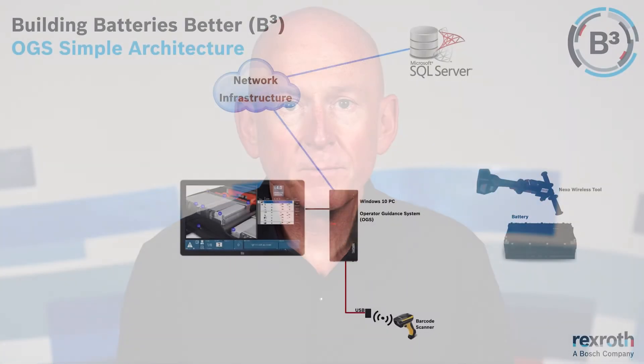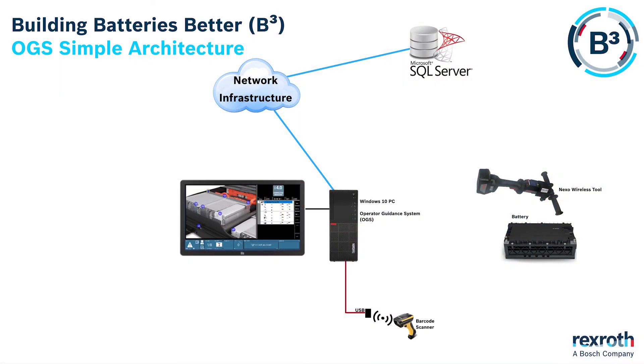It not only gives clear instructions to the worker on what to do, it also sets the correct programs in the tools that are on the cell, and also records all the information locally or to an SQL server. OGS consists of a low-cost permanent license runtime Windows 10 application and a separate configurator. The configurator is designed to be as simple as creating a PowerPoint presentation, meaning our customers are self-reliant and design their own processes. Product and process changes can be made at any point.